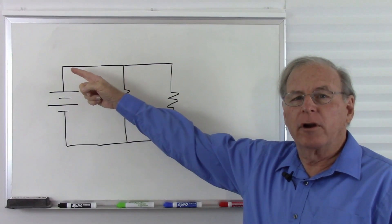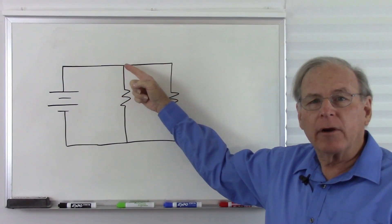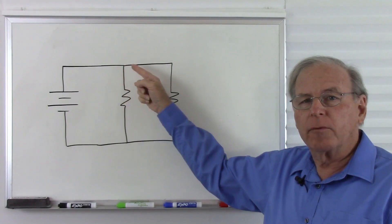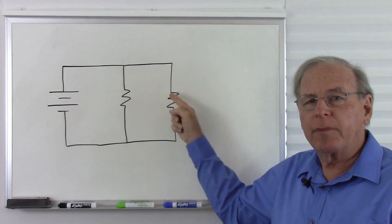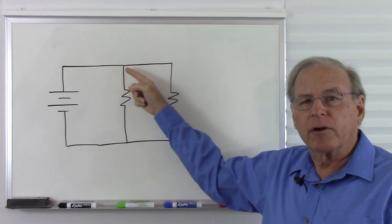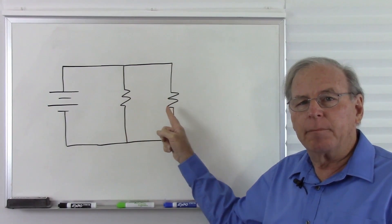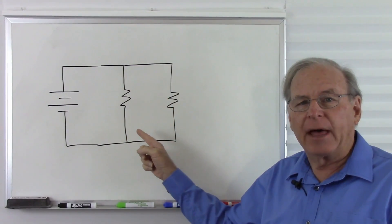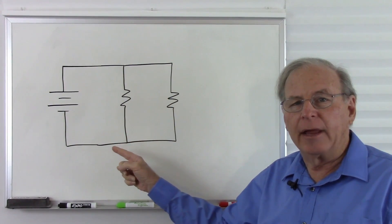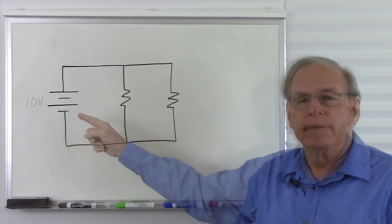The current flows from the battery and at this point there is a node where some of the current will follow this path through this resistor and the rest of the current will follow this path through this resistor. Both current paths come back together at this node and the total current flows back to the battery.